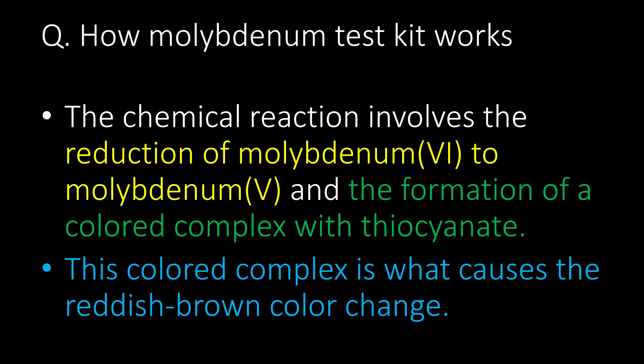The chemical reaction involves the reduction of molybdenum(VI) to molybdenum(V) and the formation of a colored complex with thiocyanate. This colored complex is what causes the reddish-brown color change.